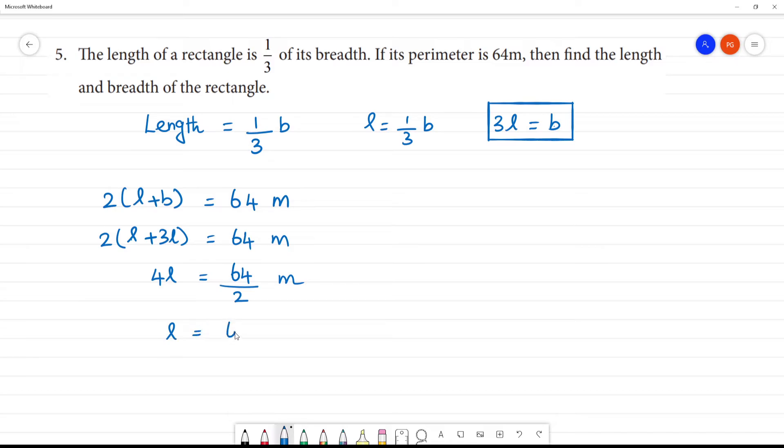So l is equal to 64 divided by 2. Cancel the 2s: 1, 2, 3, 2s are 6, 2s are 6, 2s are 4. That is equal to 32 meter. So length is equal to, length is equal to how much? 8 meter.